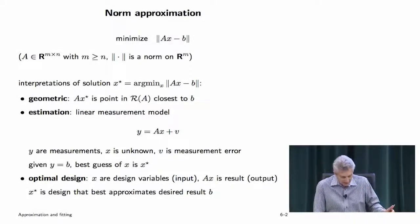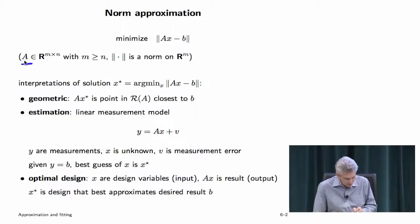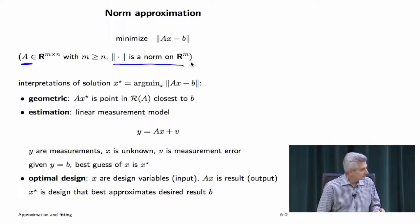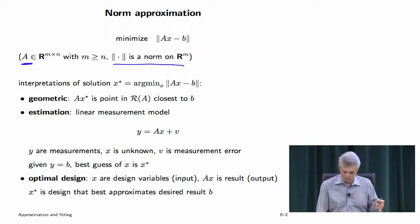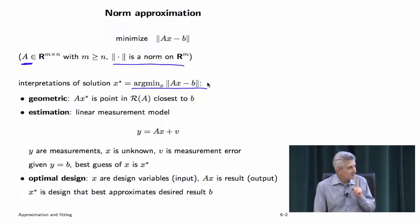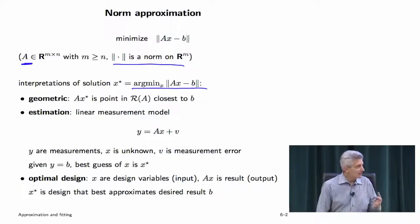Norm approximation: the simplest case is you minimize the norm of Ax minus b. Your data is a matrix A, usually with M bigger than N, so it's a tall skinny matrix. The norm here is just any old norm on R^N. When you instantiate or specify the norm, it becomes a specific problem — it becomes regression or least squares, that kind of thing. And the minimum does not have to be unique. For the two-norm, if A is full rank, it's unique. But for other norms — one-norm, infinity-norm — it's incredibly common that there are multiple optimizers.